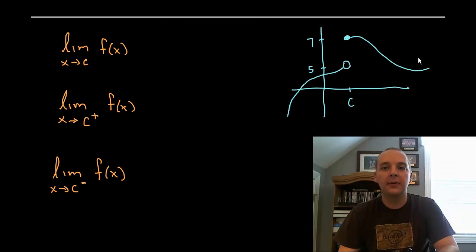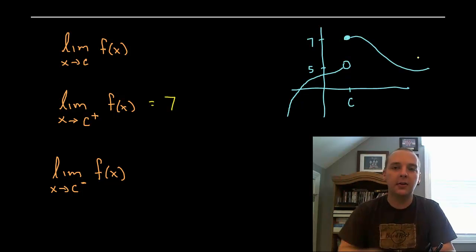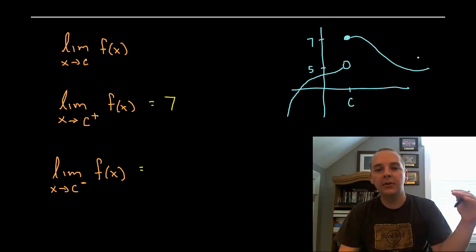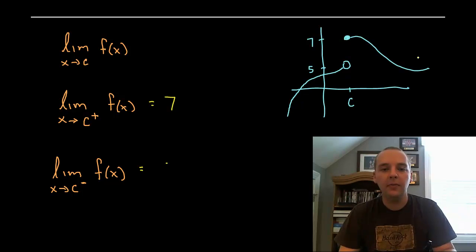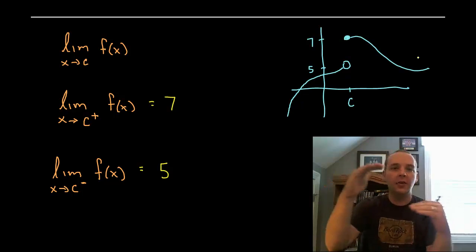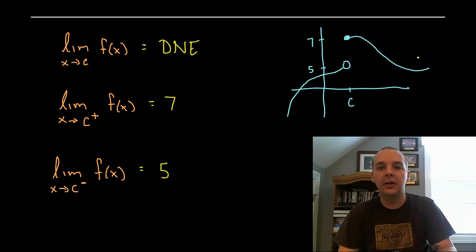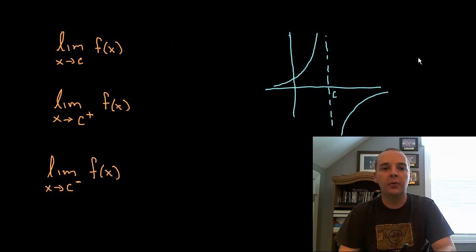Now a slightly different situation. The limit from the right-hand side goes to 7. The left-hand side, with the minus sign, goes to 5. Since 5 and 7 don't match each other — one's going one place, one's going the other — the overall two-sided limit would be DNE, which stands for does not exist.